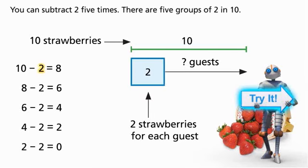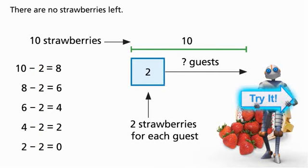You can subtract two five times. There are five groups of two in ten. There are no strawberries left. June can serve five guests.